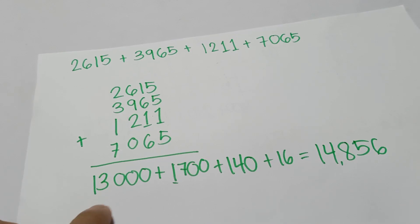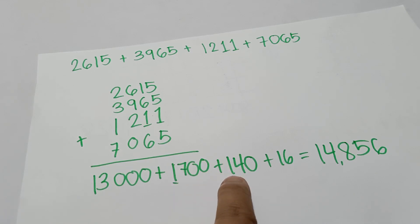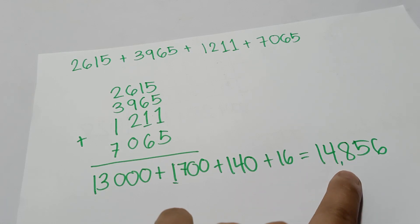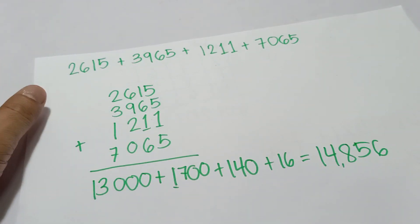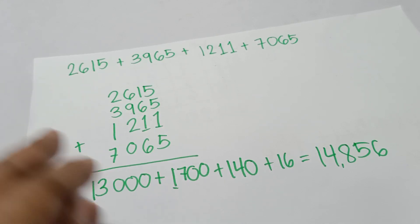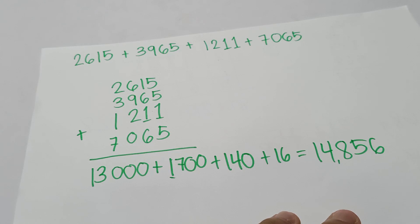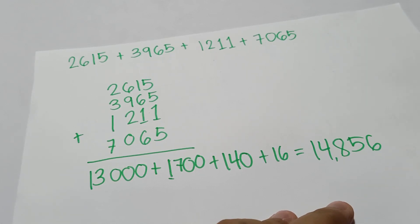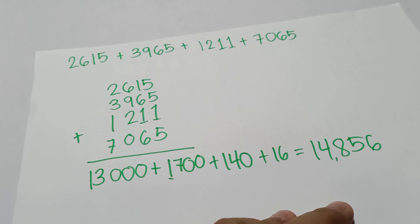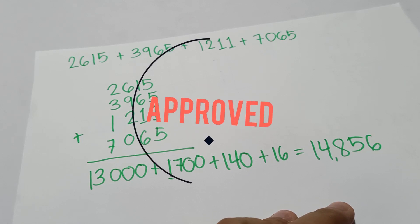There you go: 13000, plus 1000 is 14000, plus 700 is 14700, plus 140 is 14840, and that's 14856 — easy, without using carry-over! If you want to try this and want to know more, don't forget to subscribe to my YouTube channel and click the bell so you get notified when I upload again. Thanks so much and have a good night!